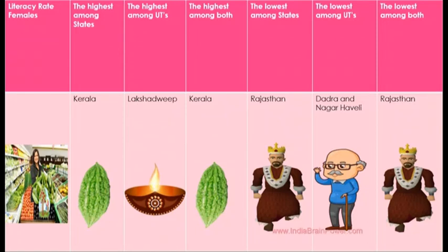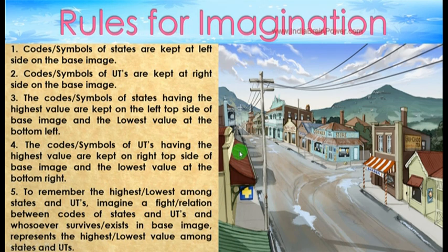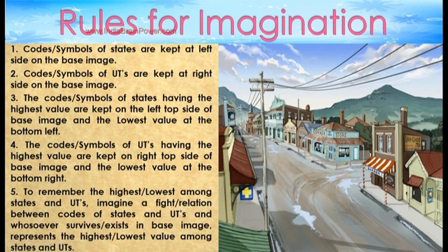Let's learn about the literacy rate for females. The code symbols of states are kept on the left side of the base image, and the code symbols of UTs are kept on the right side. The code symbol of the state having the highest value is kept on the top left of the base image, and the lowest value at the bottom left. The UT with the highest value is kept on the top right, and the lowest at the bottom right.